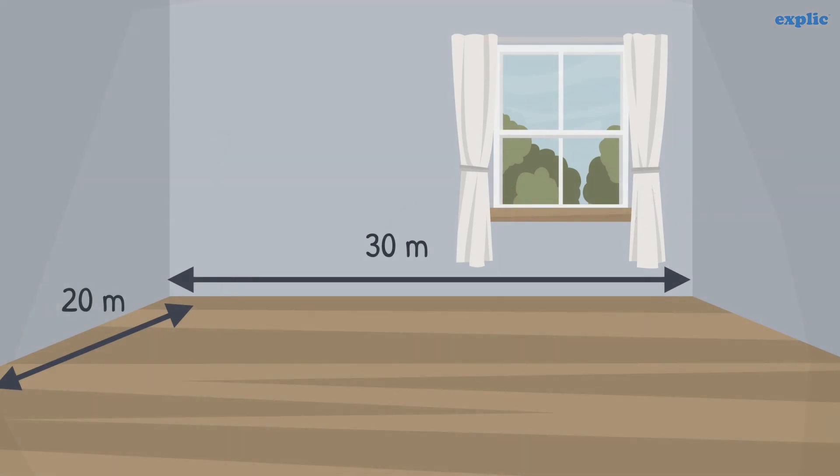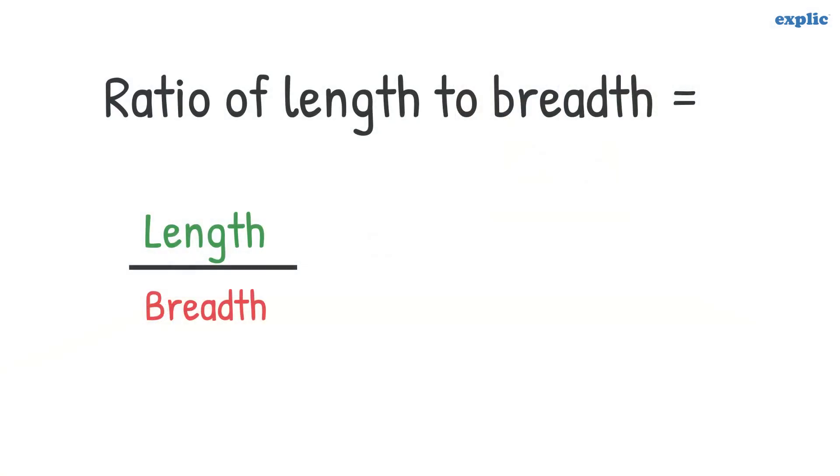If the length and breadth of a room is 30 meters and 20 meters respectively, what is the ratio of length and breadth? The ratio of length to breadth of the room is 30 divided by 20, which is equal to 3 by 2.